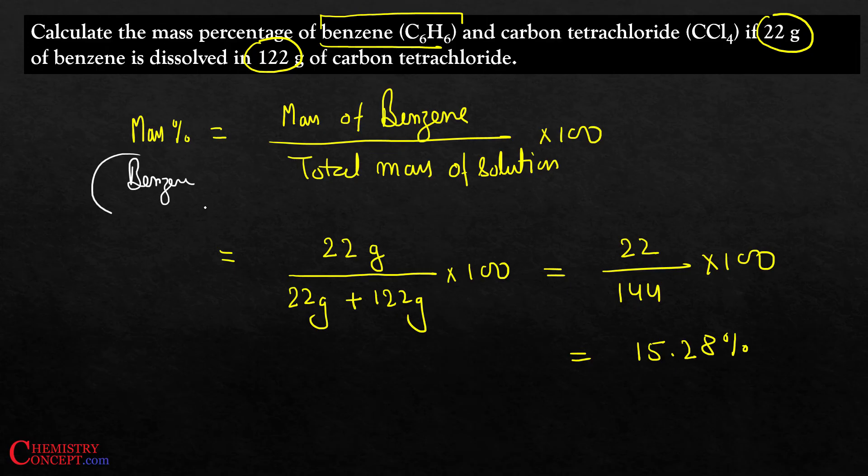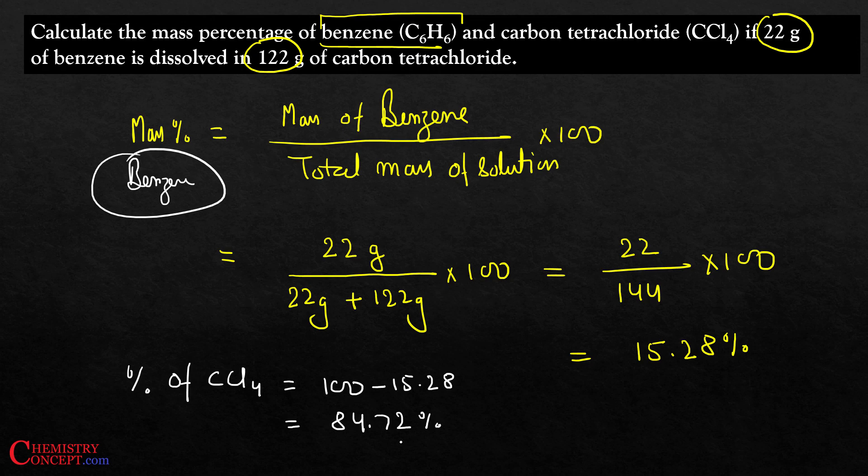For finding out the percentage of carbon tetrachloride, you can do one thing: 100 minus 15.28% because total percentage is 100 comes out to be 84.72%. That's it.